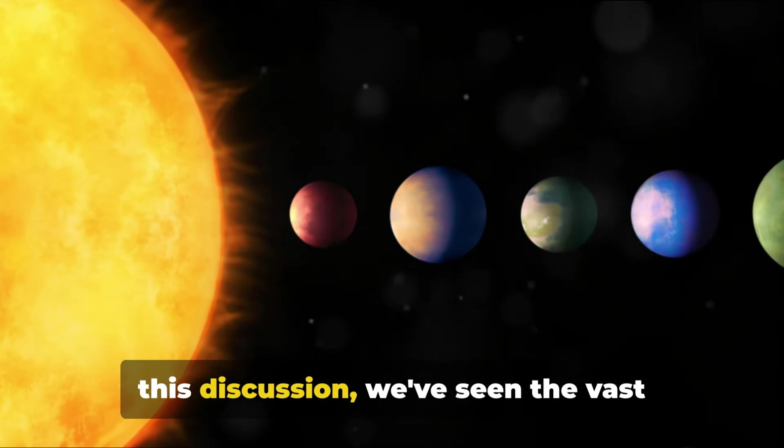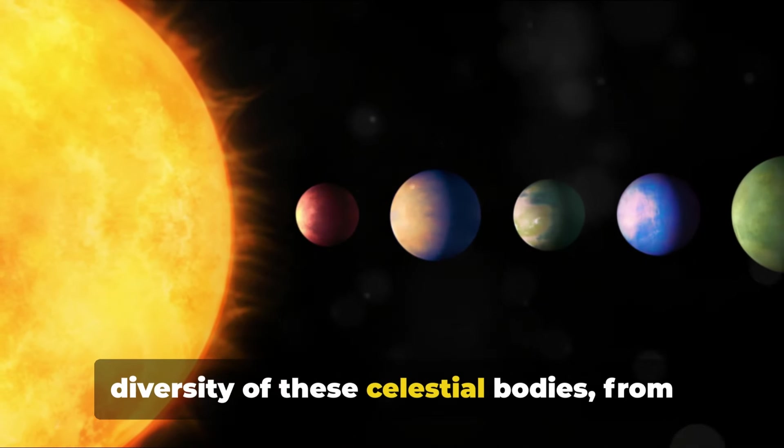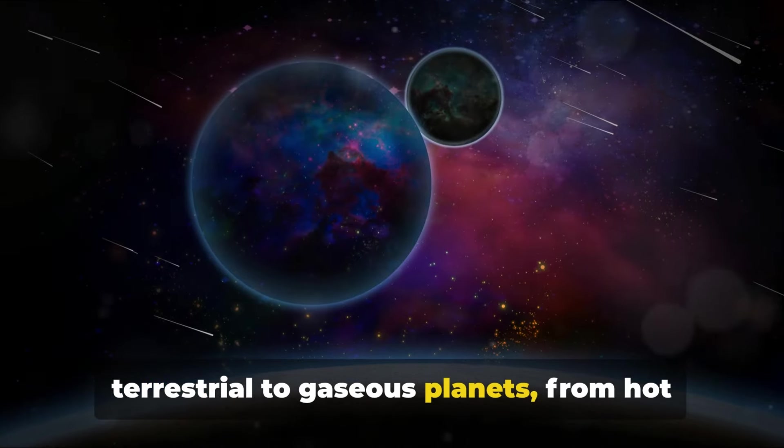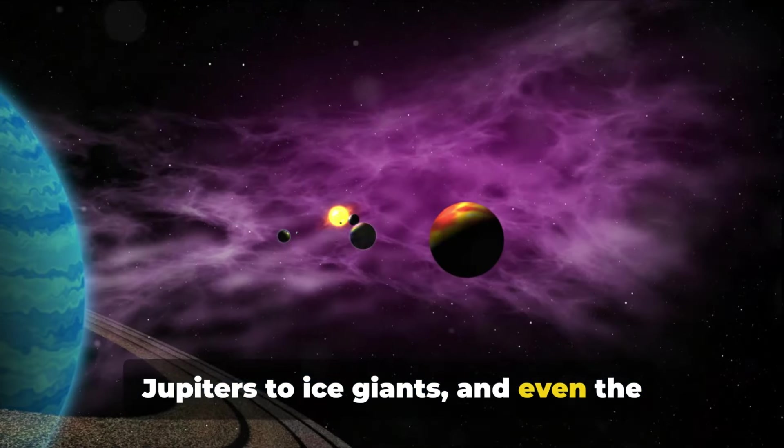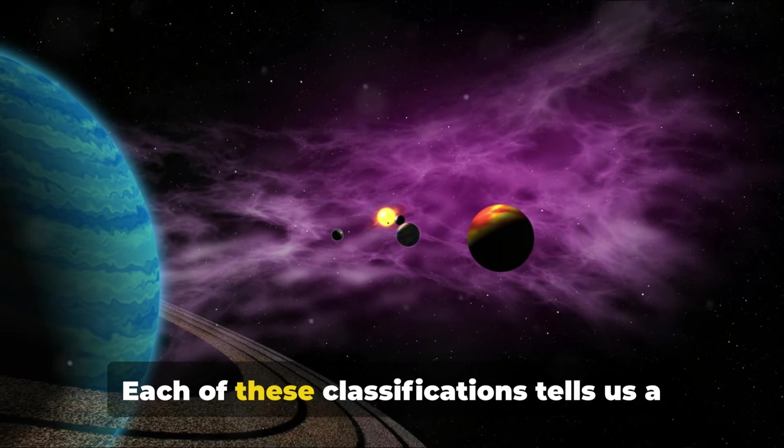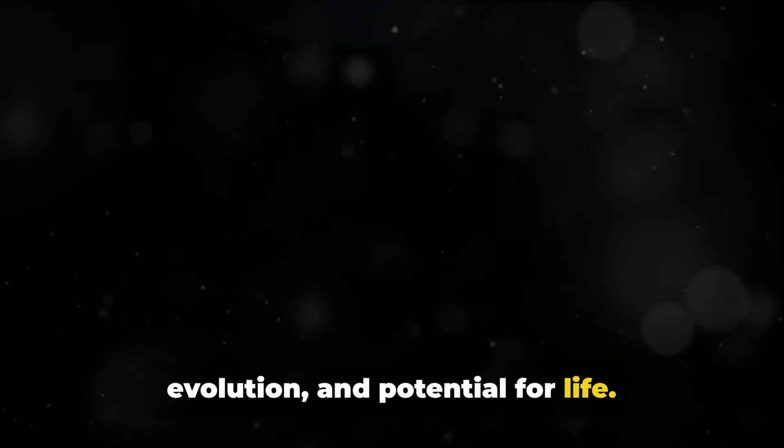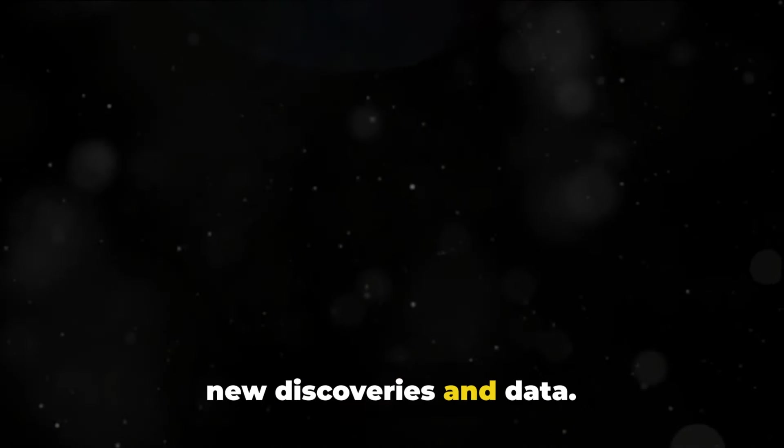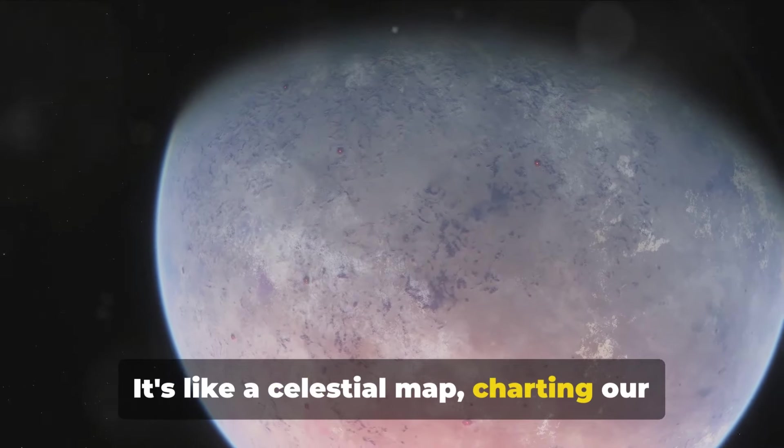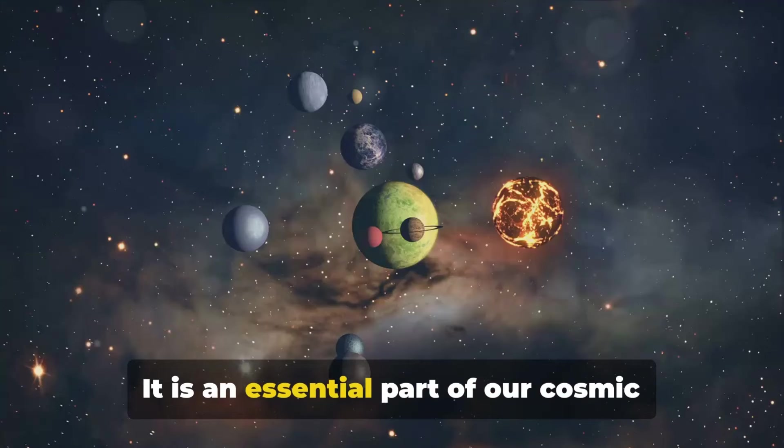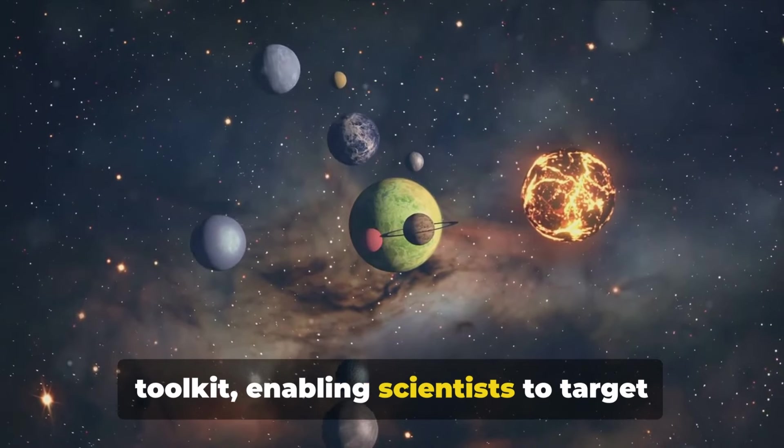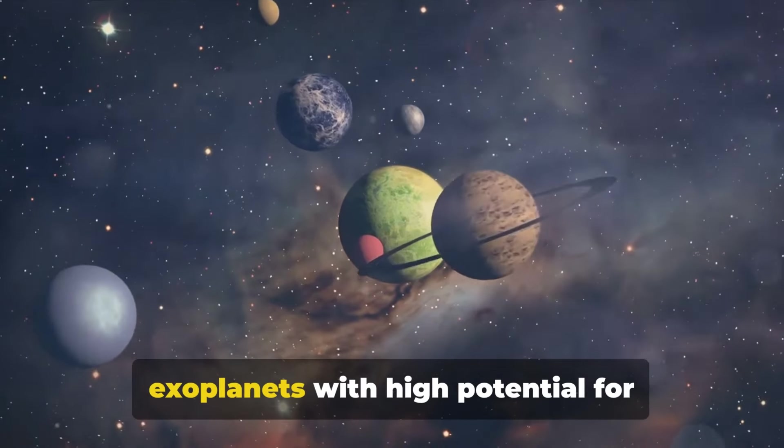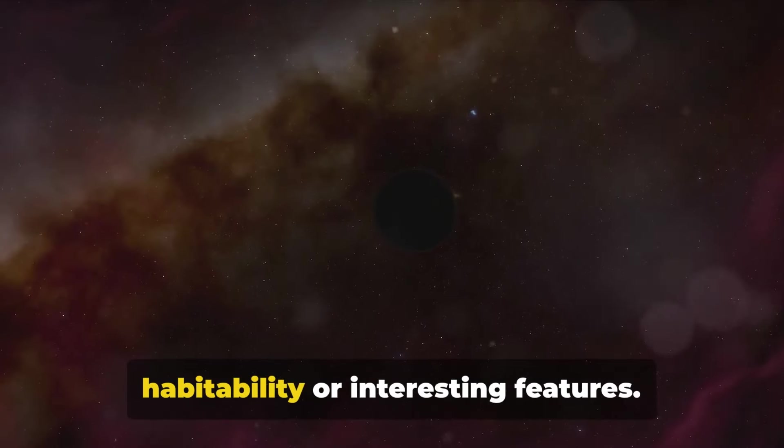As we've journeyed through the cosmos in this discussion, we've seen the vast diversity of these celestial bodies, from terrestrial to gaseous planets, from hot Jupiters to ice giants, and even the potential for water worlds. Each of these classifications tells us a story about the planet's formation, evolution, and potential for life. The classification of exoplanets is not a static process, but rather a dynamic and evolving tool that continues to adapt to new discoveries and data. It's like a celestial map charting our understanding of the cosmos. It is an essential part of our cosmic toolkit, enabling scientists to target their research on specific types of exoplanets with high potential for habitability or interesting features.